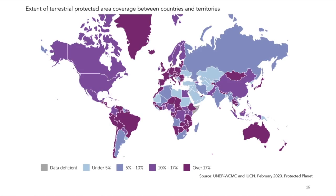This map shows how terrestrial protected areas vary by country. The shade of the country corresponds to the magnitude of the indicator — the darker the shade, the higher the value. The country with the highest value in the world is New Caledonia, with a value of 54.40, while the country with the lowest value is Afghanistan, with a value of 0.10.